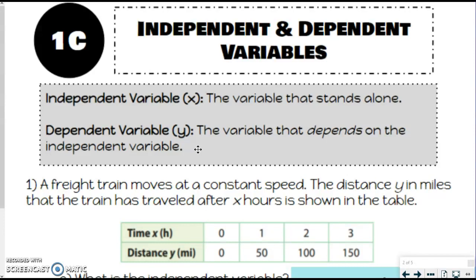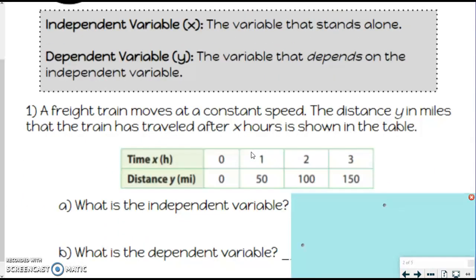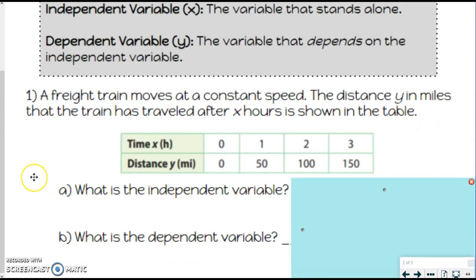So those are some tips and tricks. If that helps you, you can also just memorize it, refer back to this often, all that kind of stuff. Let's jump into an example. So we've got a freight train moves at a constant speed, the distance Y in miles that the train has traveled after X hours is shown in the table. So we don't care so much about the numbers right now. We'll look at that here in the next video. But right now we're just trying to decide which one is the independent variable versus dependent variable.